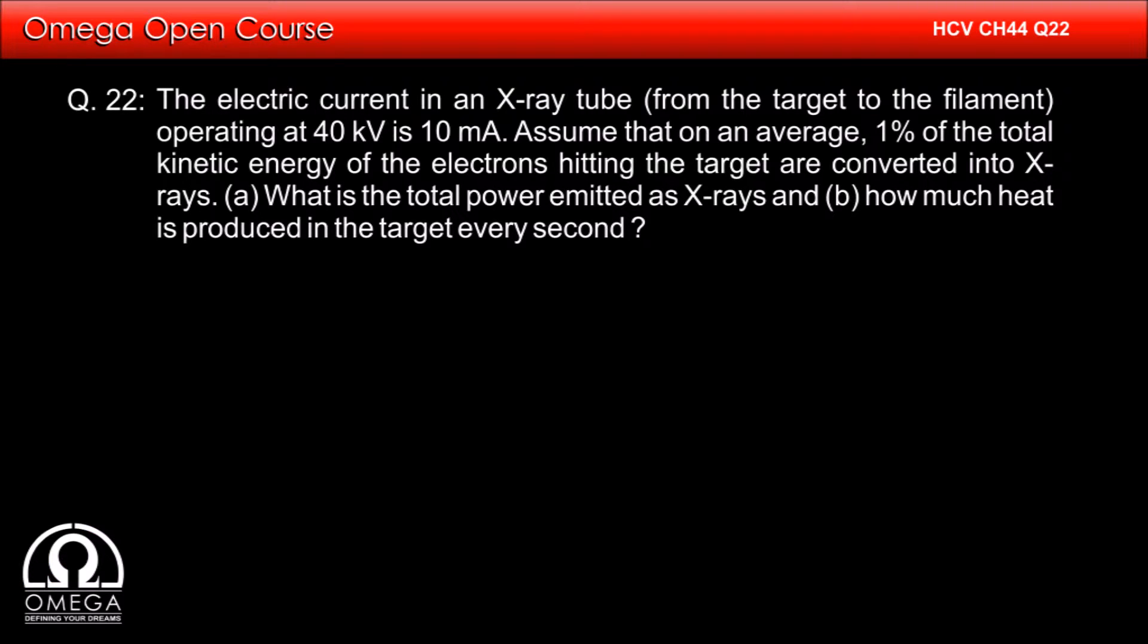The electric current in an X-ray tube operating at 40 kV is 10 mA. Assume that on average, 1% of the total kinetic energy of electrons hitting the target are converted into X-rays. (a) What is the total power emitted as X-rays? (b) How much heat is produced in the target every second?